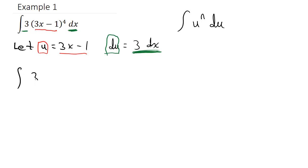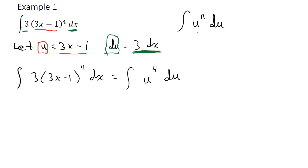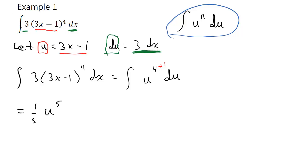So rewriting the problem: 3(3x minus 1) to the 4th dx becomes the integral of u to the 4th du. Now I can apply the power rule: add 1 to the exponent to get u to the 5th, then multiply by the reciprocal of 5, which is 1/5, plus constant c.